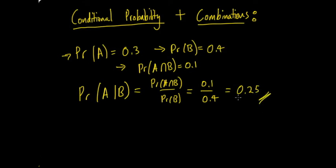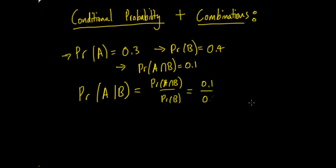You can see that the probability of A occurring is now less than 0.3. So once B has occurred, the probability of A goes down. That's an important concept, even though the formula itself is relatively easy to apply.